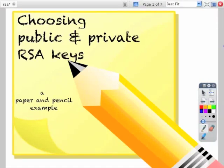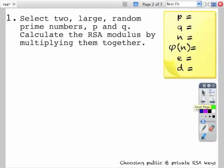This is a tutorial that demonstrates how to choose public and private RSA keys. It's called a paper and pencil example because we're using really small numbers so that it's easy to see how it all works.